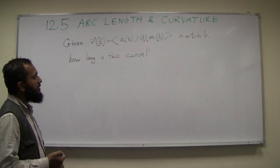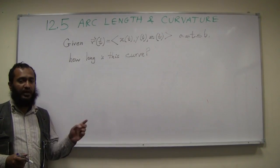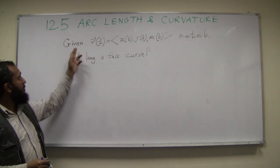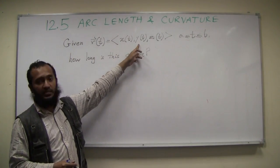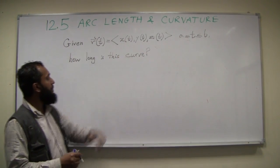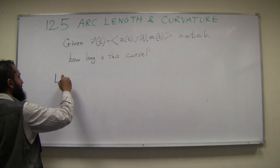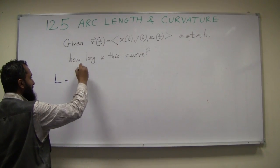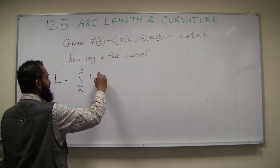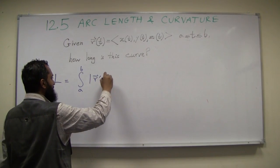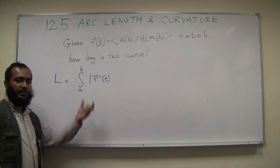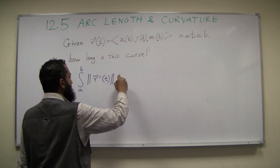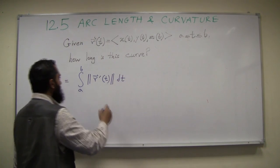Here's the way we compute this. Some of you in one-variable calculus might have already seen how this is done for plane curves where the parameterization only gives you two components, x(t), y(t). The idea is that the length is the integral from a to b of the vector length of the derivative of this parameterization, dt. This is the way we calculate this thing.